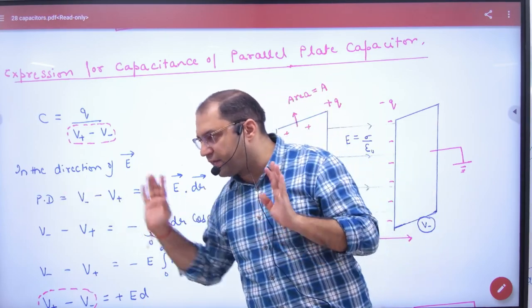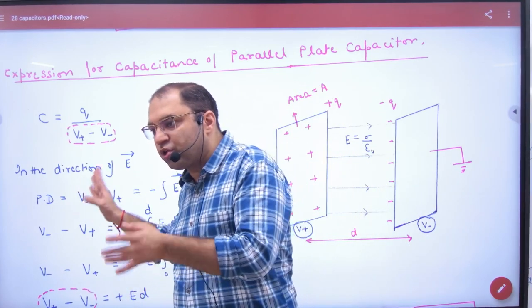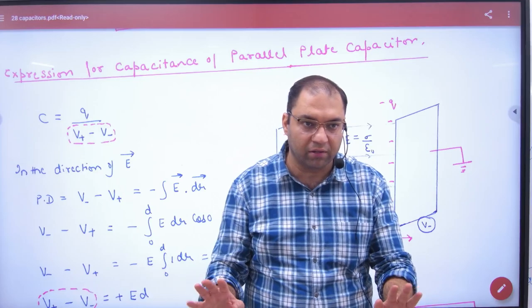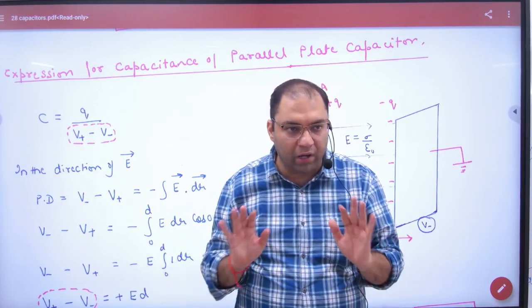What rule is it? Big potential minus small? We do not use that normally. We use like this: If we are going from this plate to this plate, whether we are going from positive to negative plate...